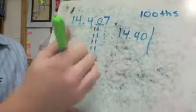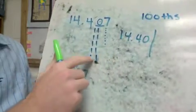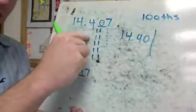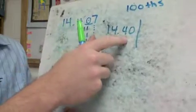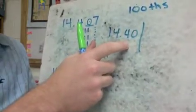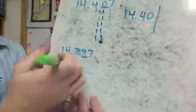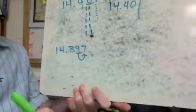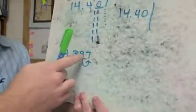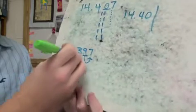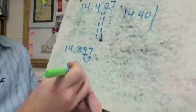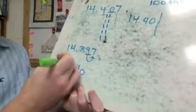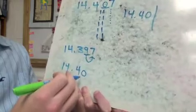Thinking it through: I almost made another hundredth, and if I filled it up to 10 thousandths, that makes another hundredth. Using the rule method: the 9 is the underlined place, I look at the 7, which is 5 or above, so I round up. My 9 becomes 10 — we can't write a 10, so we put a zero and round the next number up to 4. So we have 14 and 40 hundredths.